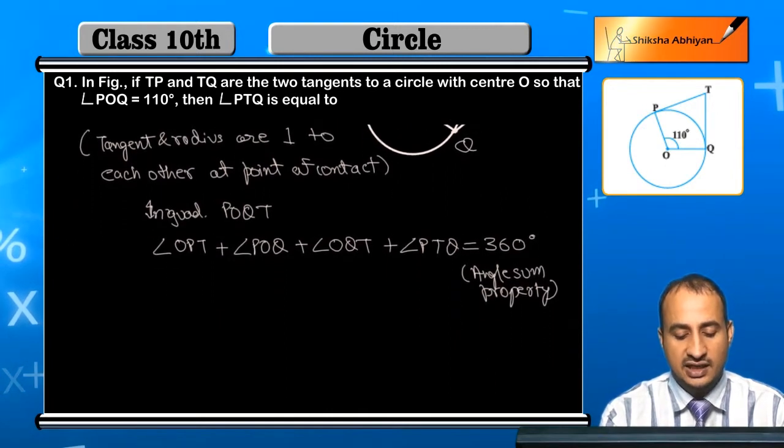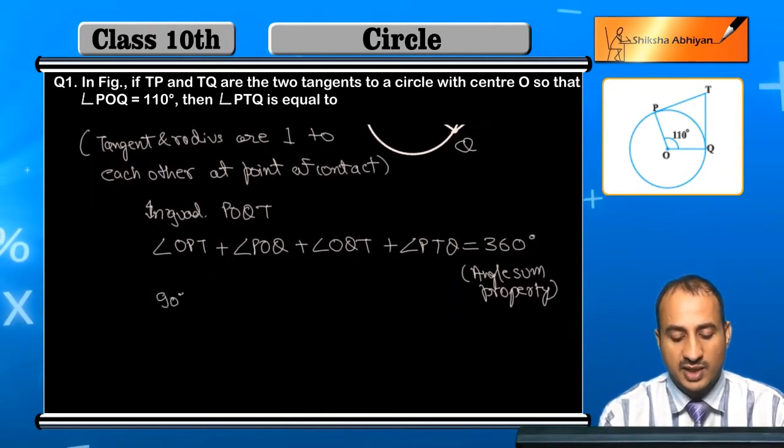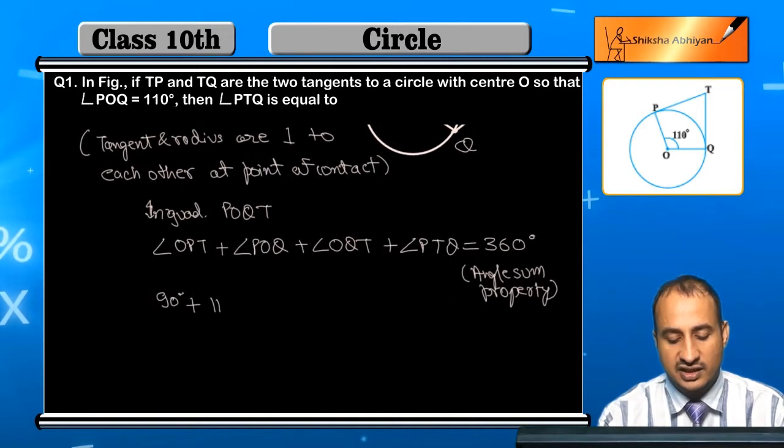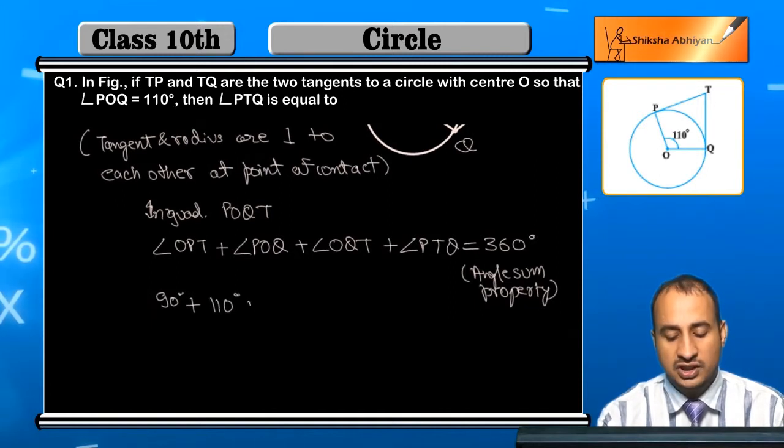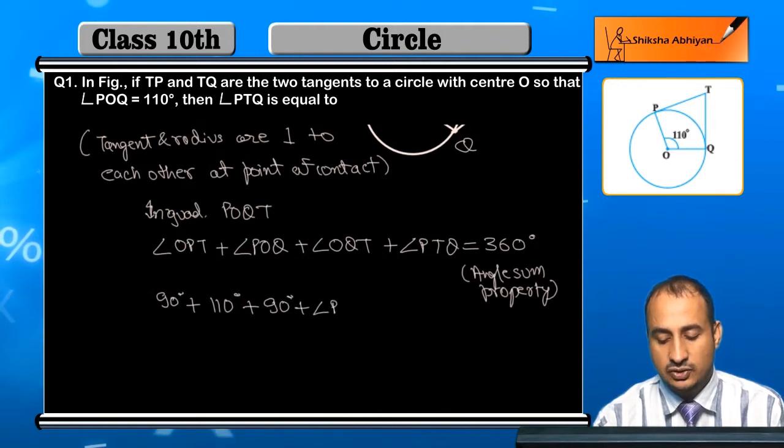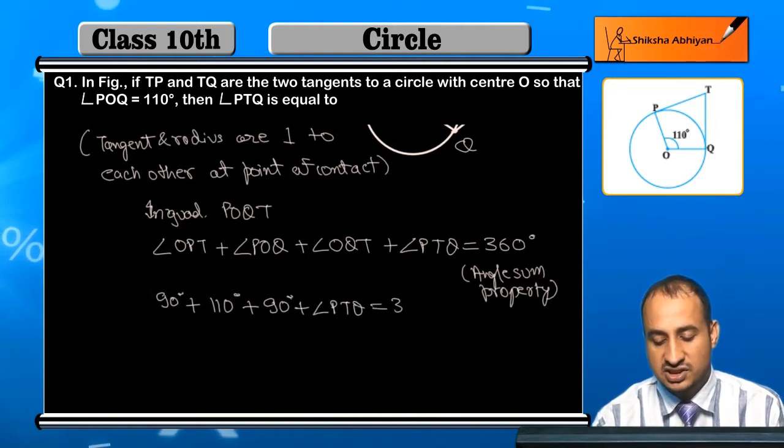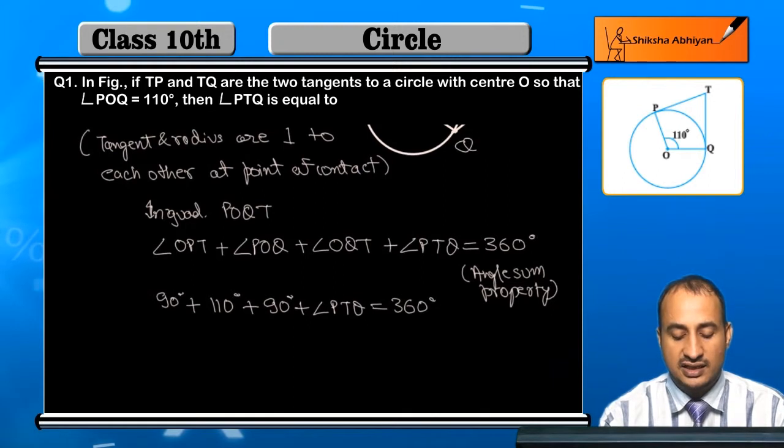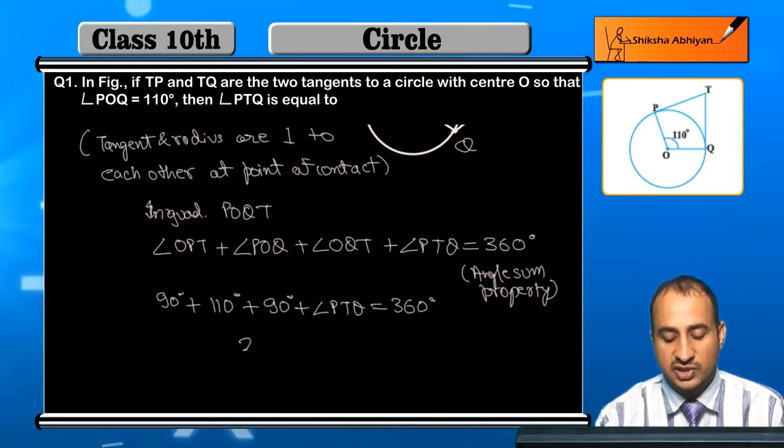Now here, angle OPT is 90 degrees. After that, angle POQ is 110 degrees. Angle OQT is 90 degrees, plus angle PTQ equals 360 degrees. Now this is 90 and 110, that's 200, and plus 90 is 290.